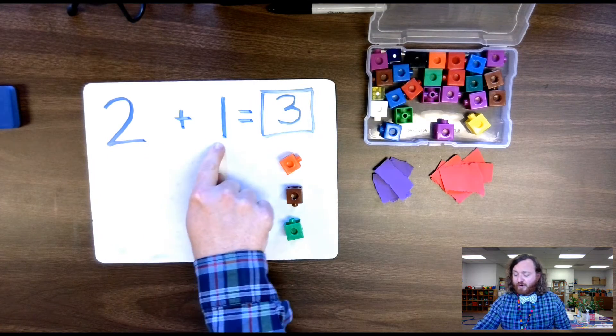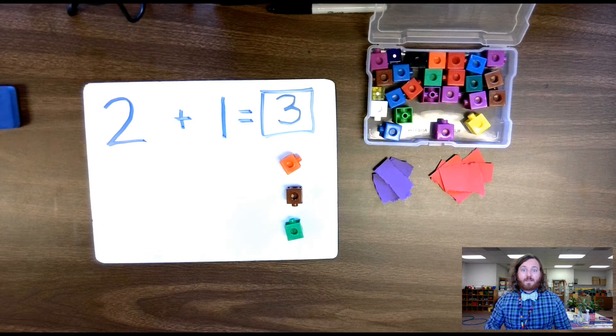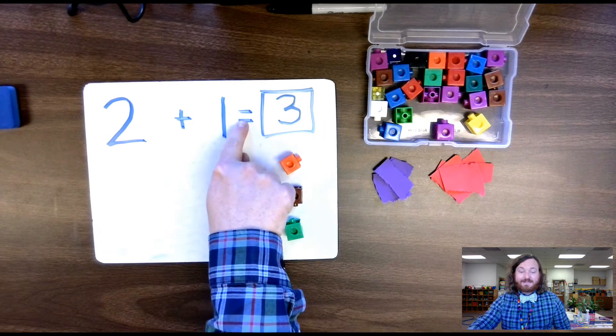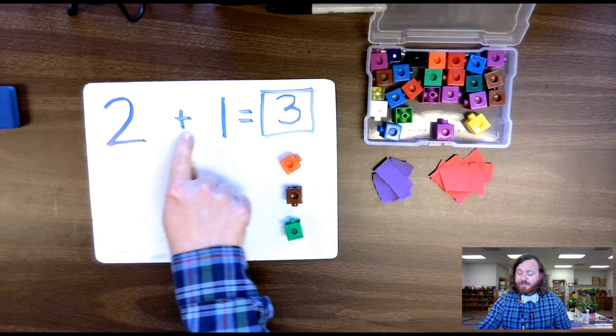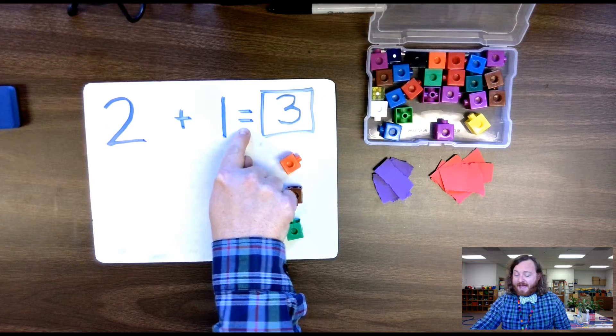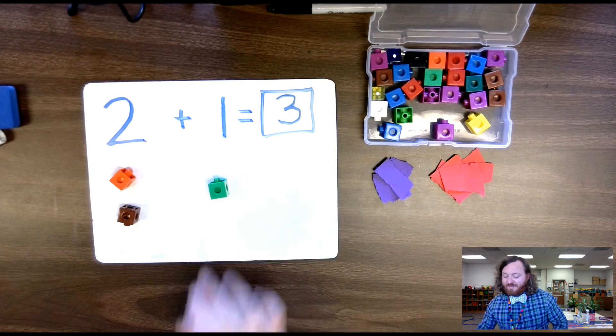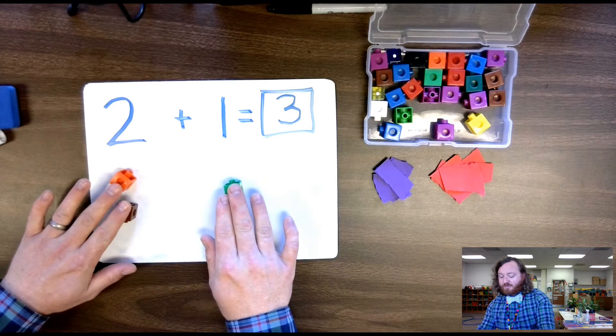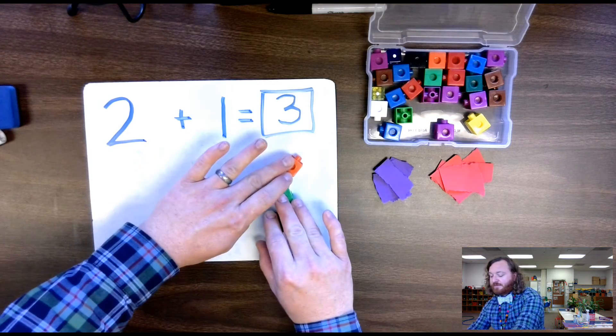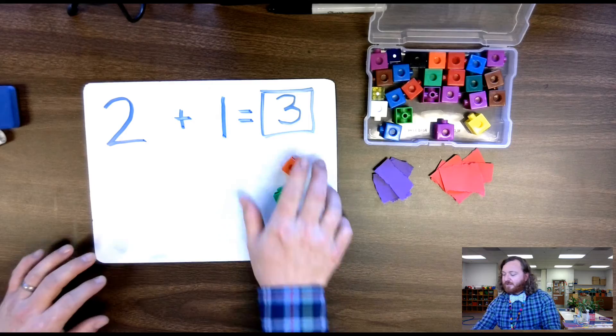There's two ways that you can read this addition sentence. You could say two plus one equals three. Or, if you remember, the equal sign means same as, so you could say two plus one is the same as three. So when you have two, and you have one, and you add one more to the two, it equals three. Okay, cool.